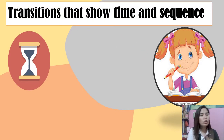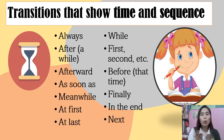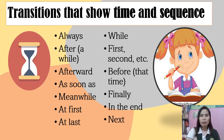Now let's look at transitions that show time and sequence. Examples include: always, after a while, meanwhile, at first, first, second, third. These words signal the order in which events happen and allow readers to understand a sequence of events. For example: 'First, we measured the perfume into the bigger container; following that, we poured it into its designated bottle; and finally, we labeled the bottle.'